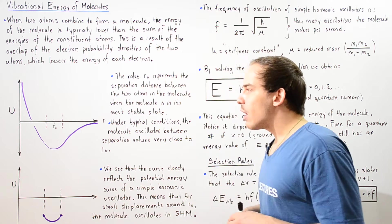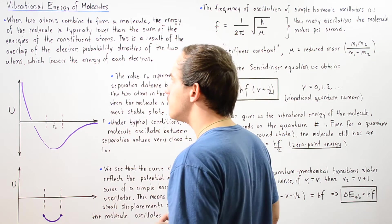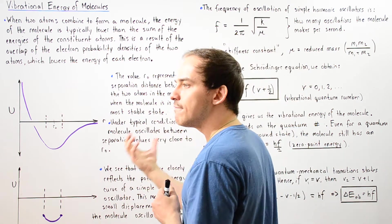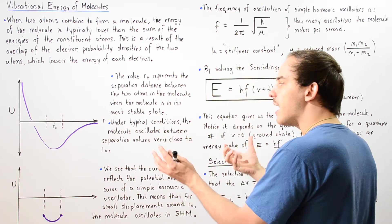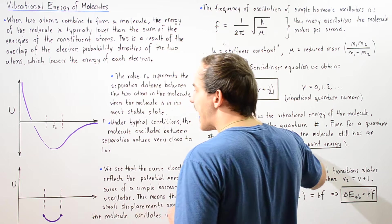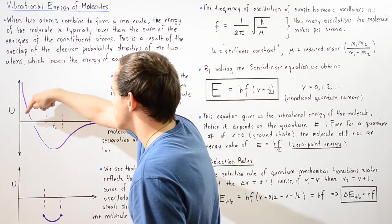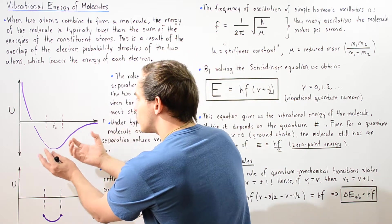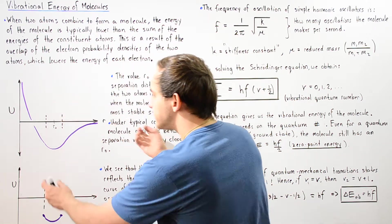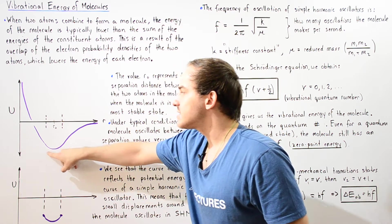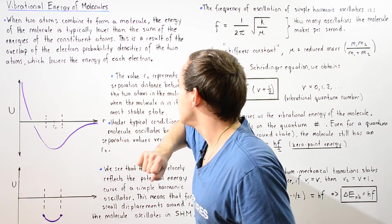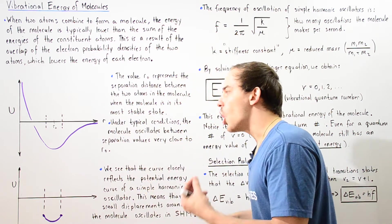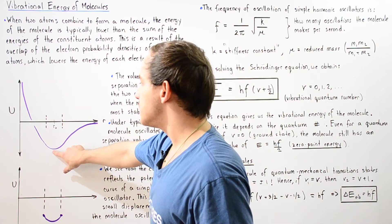Let's recall what the potential energy diagram for the formation of a molecule looks like. When two atoms combine to form a molecule they form a chemical bond — an overlap of atomic orbitals, of electron clouds. As the separation distance between the two atoms decreases, shown on the x-axis, and potential energy U on the y-axis, it decreases to an optimum value given by R-naught. That quantity corresponds to the lowest possible energy state of the molecule, where R-naught represents the separation distance when the molecule is in its lowest energy and most stable state.